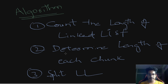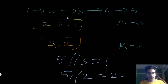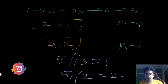The most important step is the second one — determining the length of each chunk. Let's discuss how we can determine chunk sizes. Suppose k equals three: we have to divide the linked list into three parts, so each chunk should be 2, 2, 1. If k equals two, the chunk list will be 3, 2.